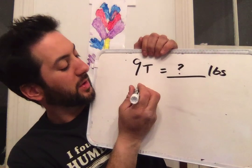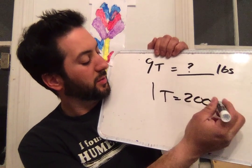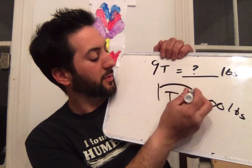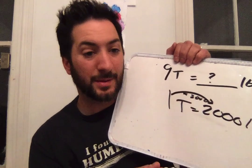Number five: nine tons equals blank pounds. You have nine tons equals question mark pounds. The conversion is one ton equals 2,000 pounds. What do you do to get from here to here? Multiply by 2,000. Do the same thing: nine times 2,000 equals 18,000.